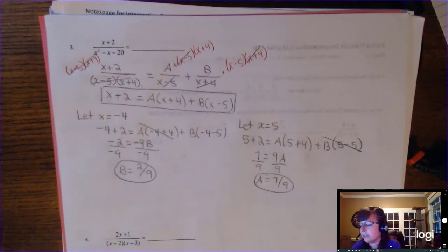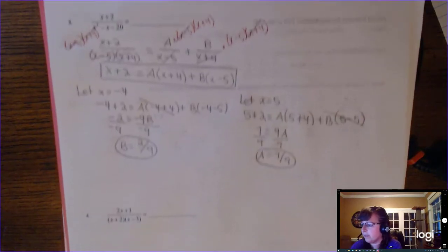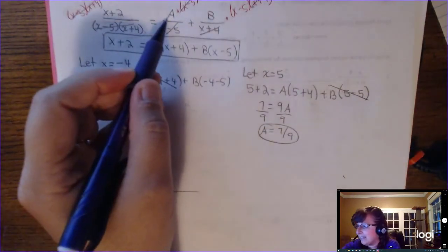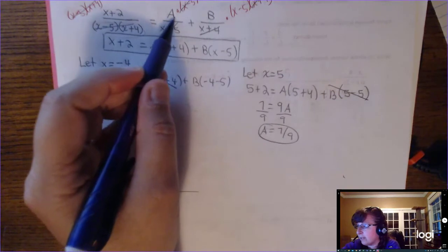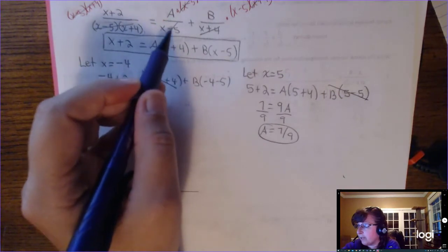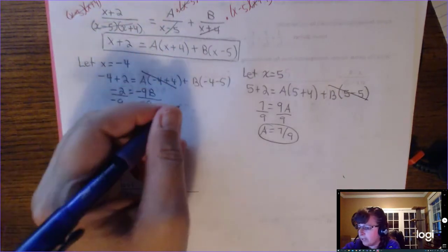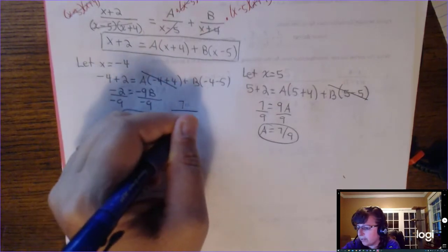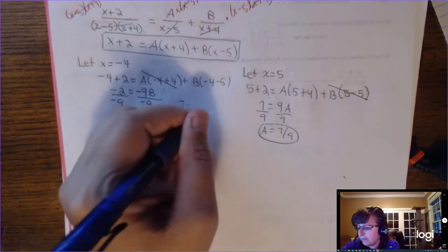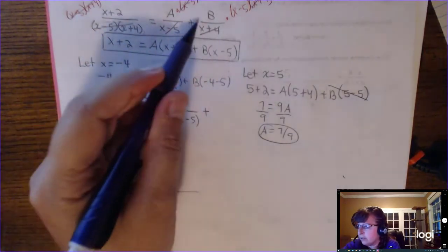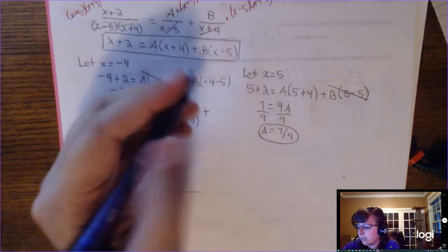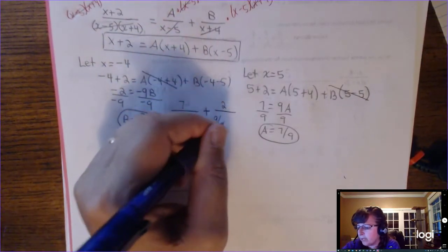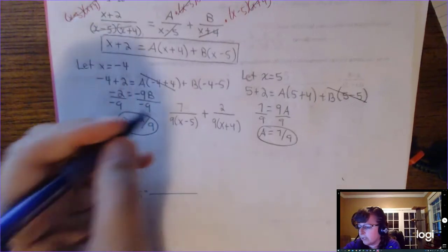A is 7 ninths, so it goes with the factor x minus 5, but I'll put the 9 down with the factor: 7 over 9 times x minus 5. B is 2 ninths over x plus 4, which simplifies to 2 over 9 times x plus 4.